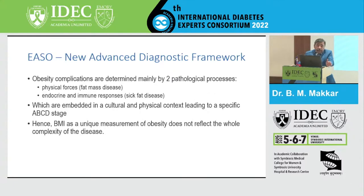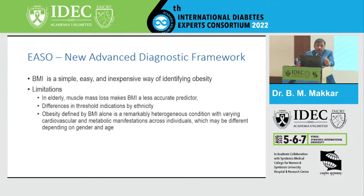Obesity complications are determined by two main pathophysiological processes: the physical forces — that is the fat mass — and the dysfunctional fat or the sick fat, which are embedded in the cultural and physical context, leading to the specific ABCD stages defined based on this concept. BMI as a unique measurement of obesity does not reflect the whole complexity of disease and should not be considered the basic definition of obesity. Yet BMI is a simple, easy, and inexpensive way of identifying extra fat mass in the body and is still being retained — but you have to look at the stages of the disease based on the ABCD algorithm.